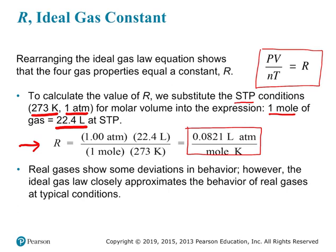You might remember from earlier in this module that real gases can deviate from ideal behavior. The kinetic molecular theory tells us gases behave in a specific way, but that's not always the case — some gases are larger, some have attractions between them. Real gases might not follow ideal behavior exactly, but the ideal gas law is still a really good approximation and a very useful equation.